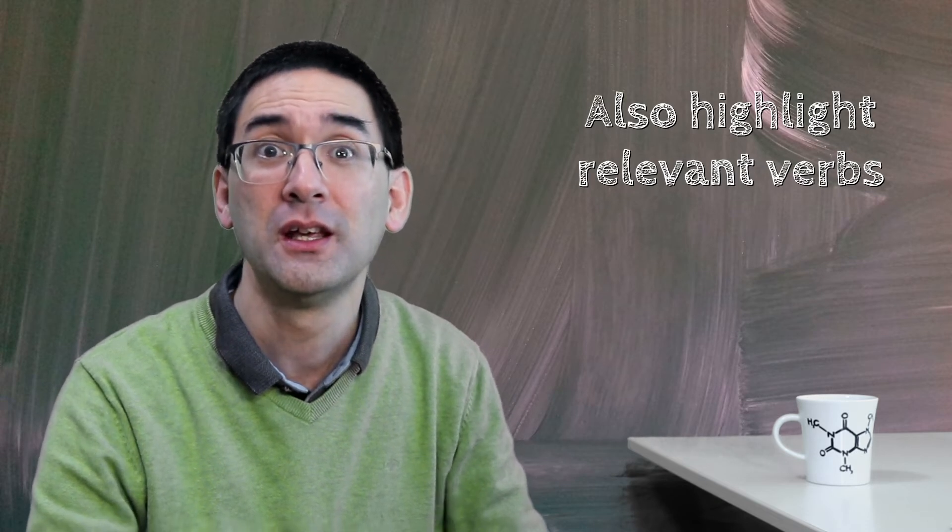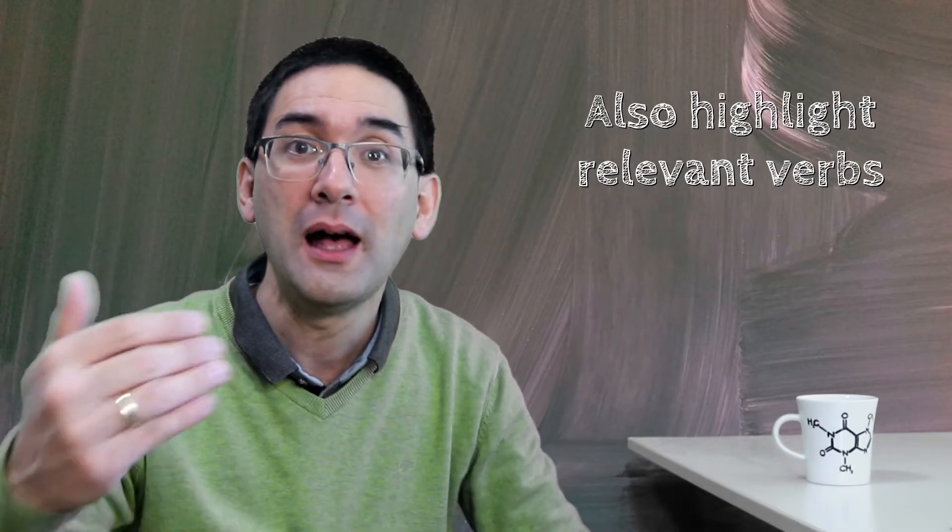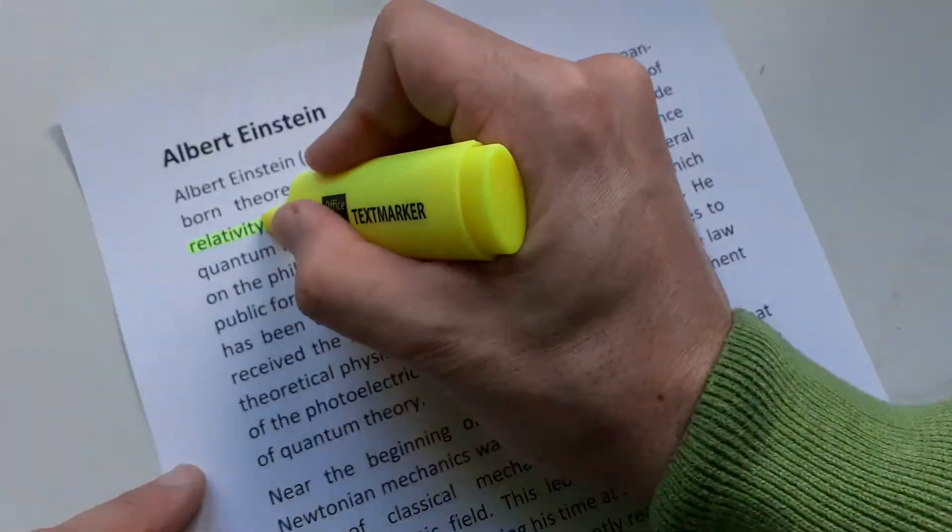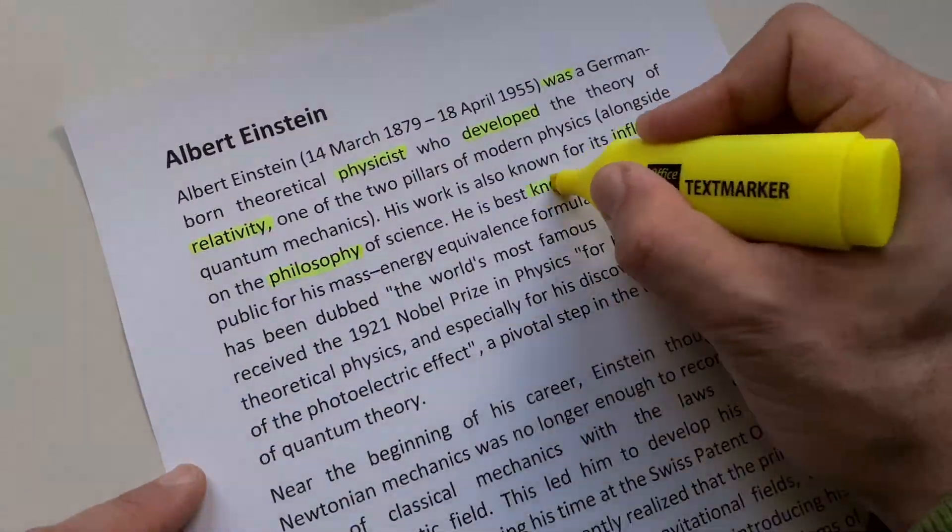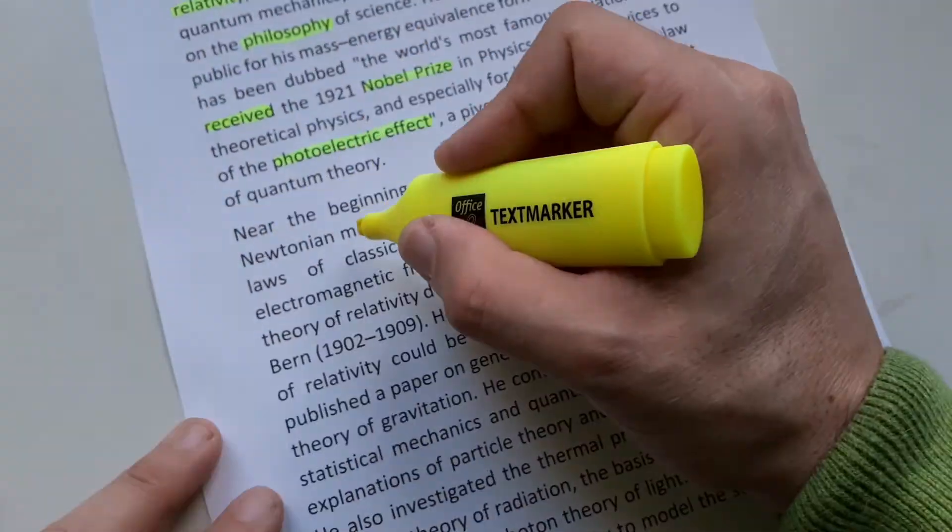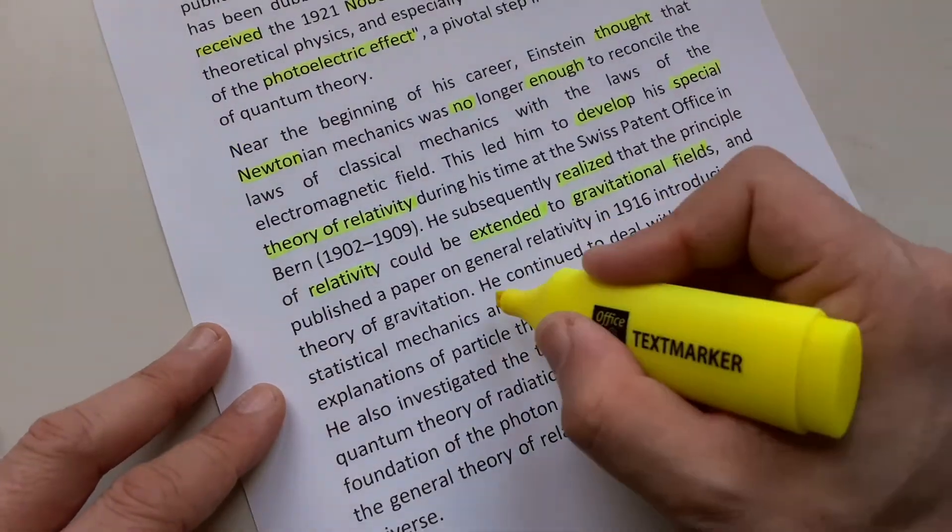What I want to summarize is that you also have to highlight the verbs. That is a very important thing, and I'm going to show you now how to do that. I'm going to be using the Wikipedia text of Albert Einstein.